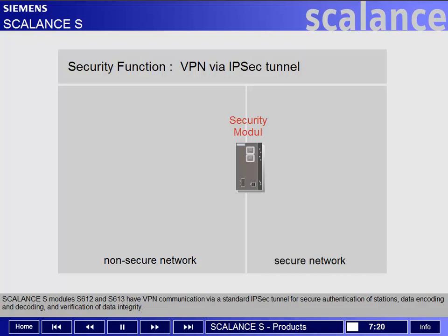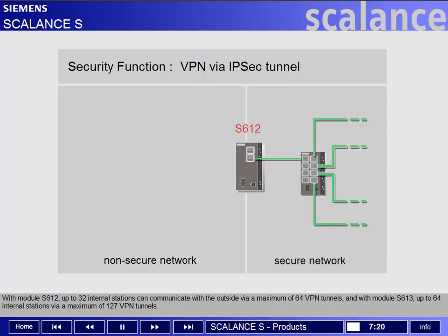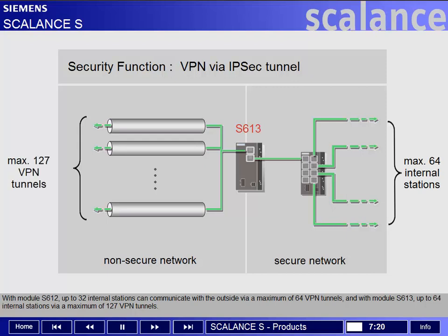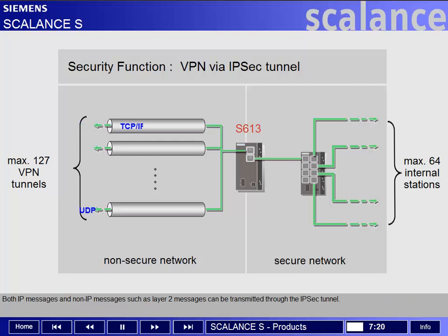Scalance S-Modules S612 and S613 have VPN communication via a standard IPsec tunnel for secure authentication of stations, data encoding and decoding, and verification of data integrity. With Module S612, up to 32 internal stations can communicate with the outside via a maximum of 64 VPN tunnels, and with Module S613, up to 64 internal stations via a maximum of 127 VPN tunnels. Both IP messages and non-IP messages, such as Layer 2 messages, can be transmitted through the IPsec tunnel.